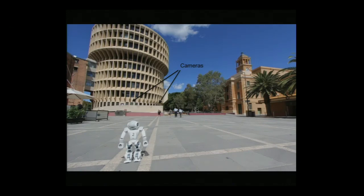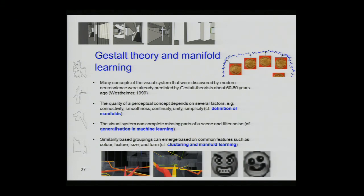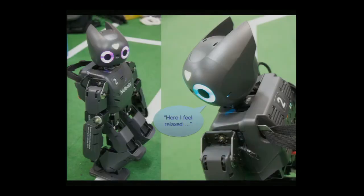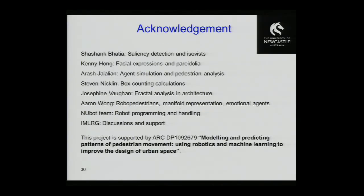In summary, we discussed the emotional module that turns the robot's visual input of urban space into an emotional state. We reach our aim if we can implement on the robot a way that it feels happy when I feel happy at the same place, looking in the same direction. I would like to thank all my collaborators who contributed to this project.